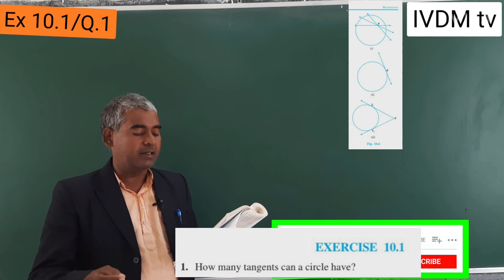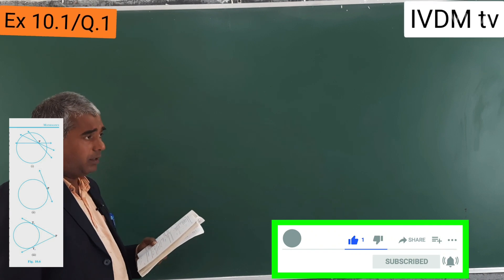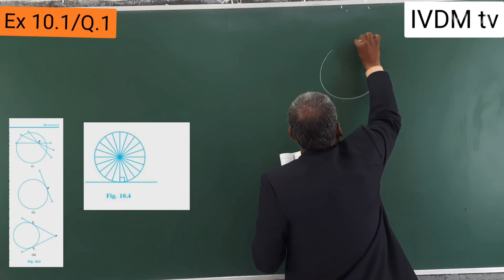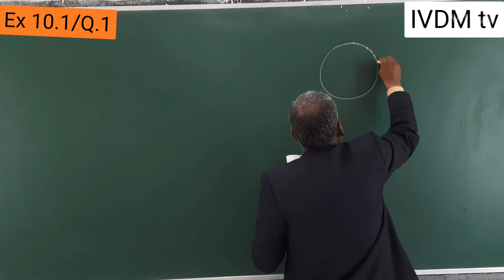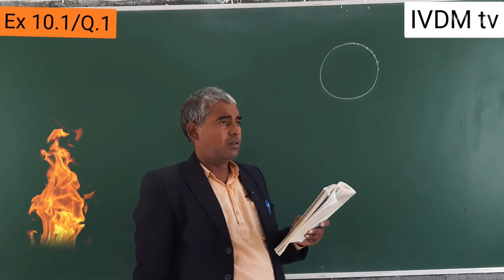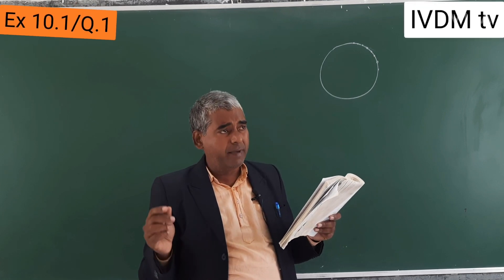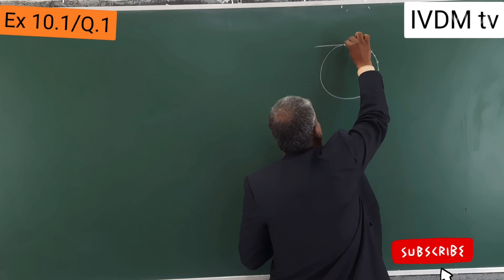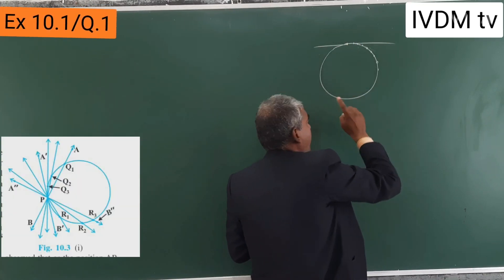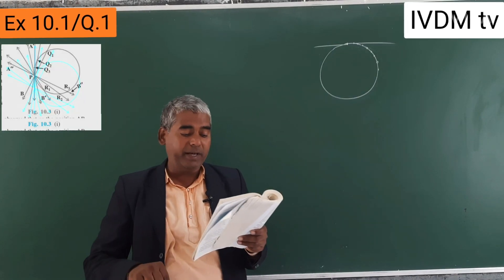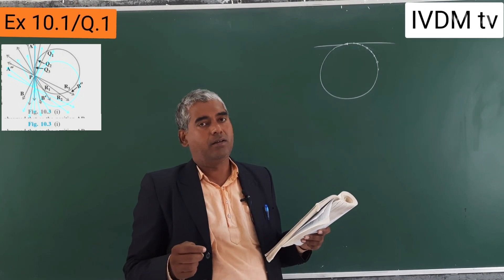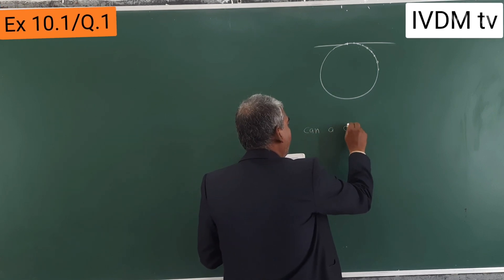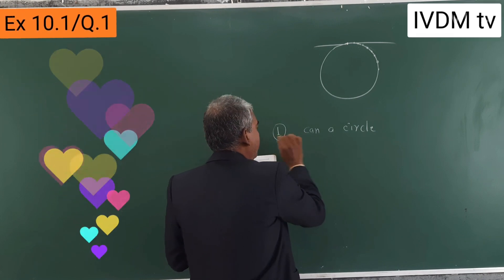How many tangents can a circle have? A circle has an infinite number of points. So for each point, a tangent is possible — for this point, this point, everywhere. Therefore, how many tangents can a circle have? The answer is infinite.